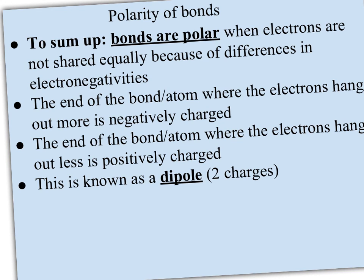To sum up: bonds are polar when electrons are not shared equally, and electrons are shared unequally when there are differences in electronegativities — differences greater than 0 but less than 1.7. The end of the bond where the electrons hang out more is going to be more negatively charged, and the area where electrons hang out less is positively charged. This is known as a dipole — a positive end and a negative end to the bond.